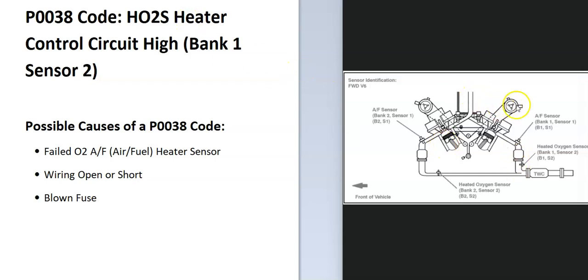So if you want to find bank one, just find the number one cylinder. And that would be the side of the engine having the problem. And then the second sensor going down that side is going to be the one having the issue.